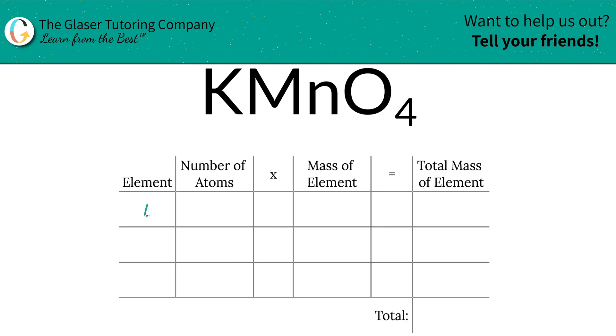The first thing we're going to do is write the elements we see in the compound. So we have potassium, we have manganese, and we have oxygen.